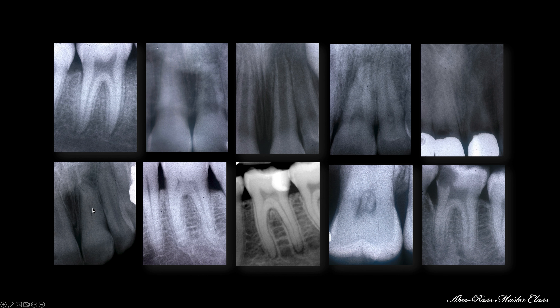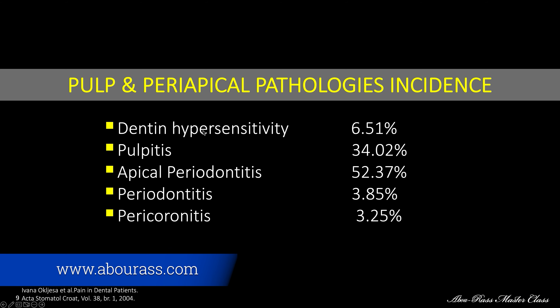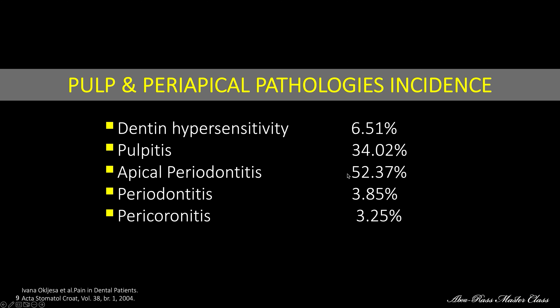So the pulp is our concern. Walden Belt stated that orofacial pain should all be considered toothache until proven otherwise. And if we look at the statistics — from dentinal hypersensitivity to pulpitis to apical periodontitis — almost 90% of the pathology here is because of the pulp. The periodontal accounts for only about 4%, and pericoronitis about another 3%. So the pulp is essential, and this is all within the size of the pulp cavity itself, in the chamber and the canal.